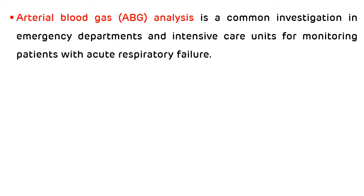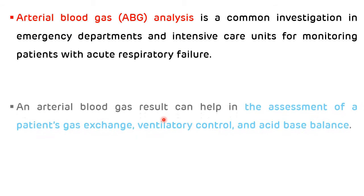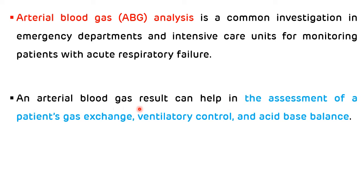Arterial blood gas analysis, or ABG analysis, is a common investigation done in emergency departments as well as in intensive care units for monitoring patients with acute respiratory failure. Unlike other common blood investigations which are done from venous blood, ABG is done from arterial blood. An arterial blood gas result helps in the assessment of a patient's gas exchange, ventilatory control, and acid-base balance.